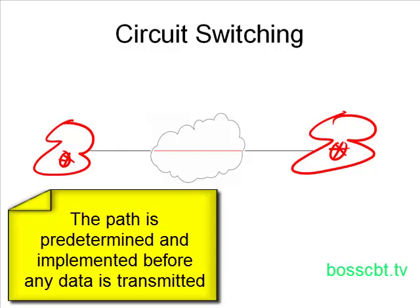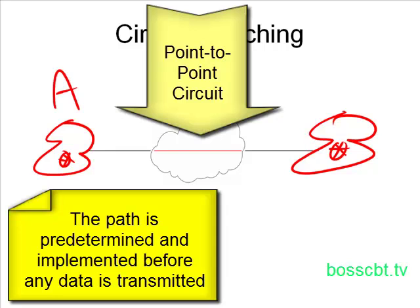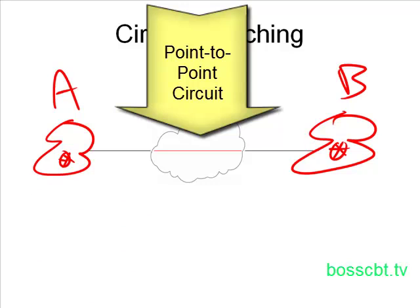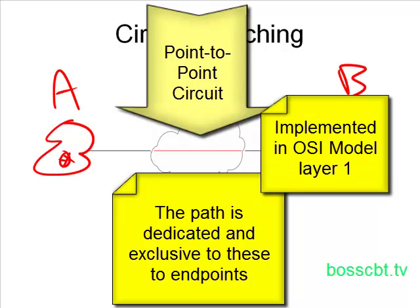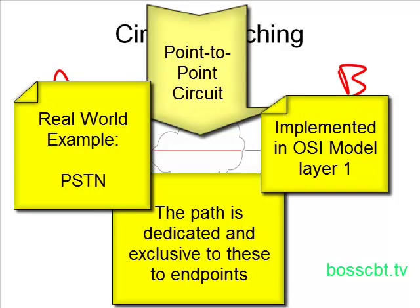Not only that, we're creating a point-to-point circuit here — we have point A and point B, and that's it. There's nothing else involved. So that leads us to another characteristic: this is a dedicated path between the two. It's exclusive — no other devices are using this path while these two phones are talking to each other. Circuit switching is implemented in layer one of the OSI model, and the PSTN is the biggest and greatest example of circuit switching.